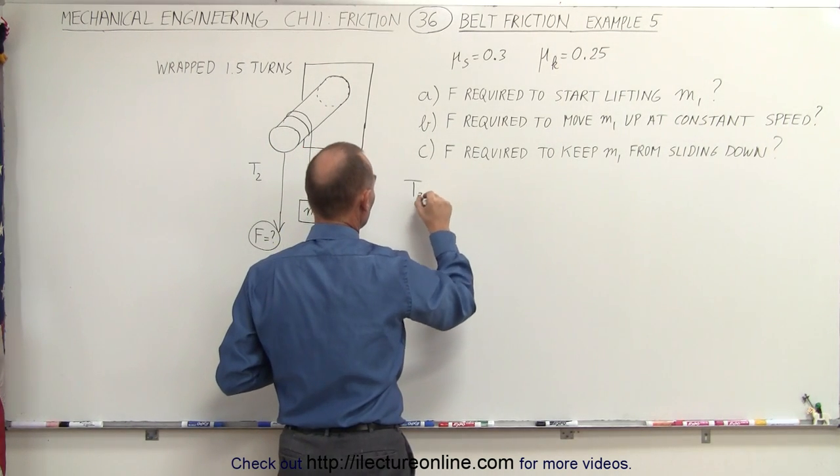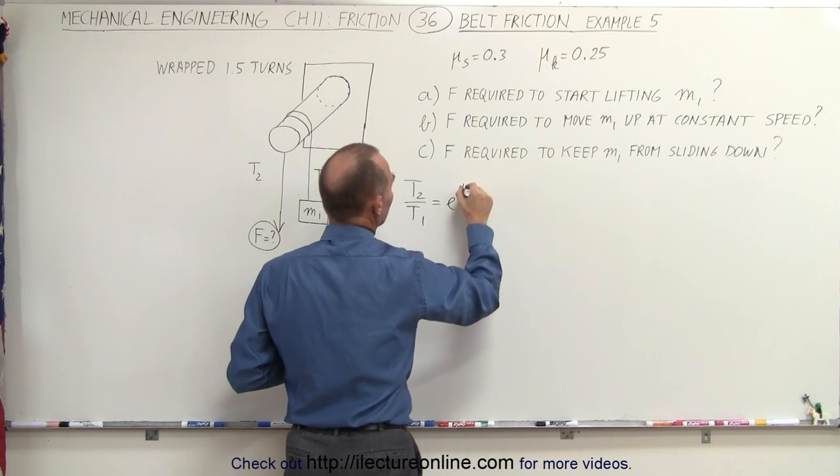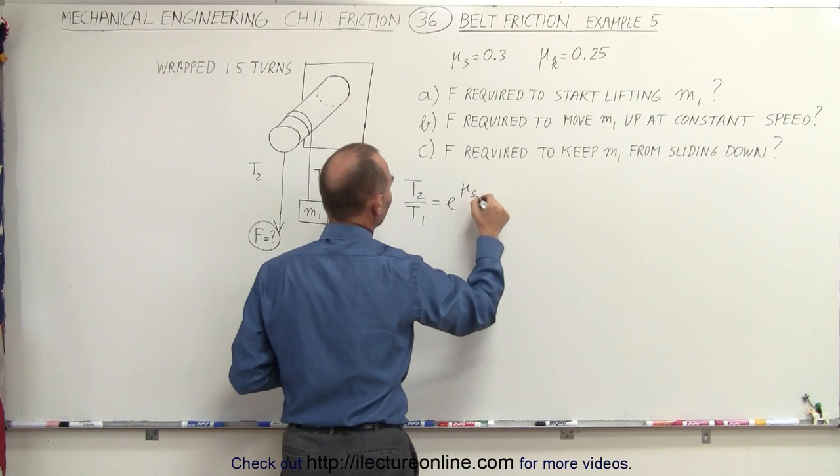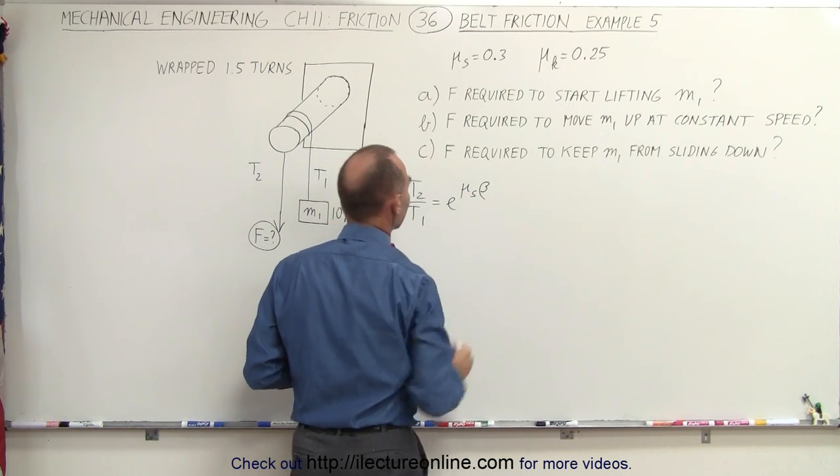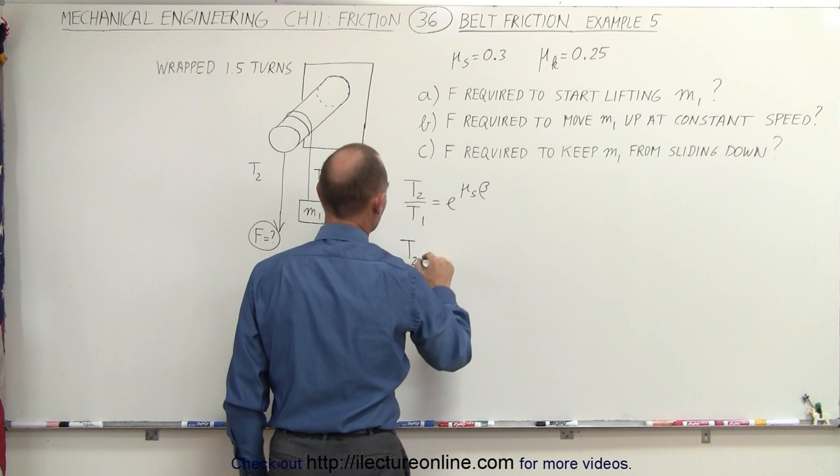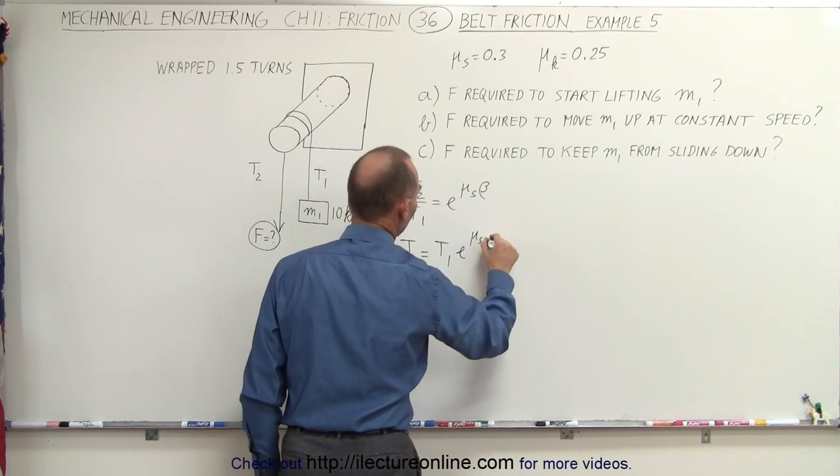We started with T2 divided by T1 is equal to e to the mu. In the first case, for part A, we're going to use mu sub s times the angle beta. Since we're looking for T2, we can write that T2 is equal to T1 e to the mu sub s times beta.